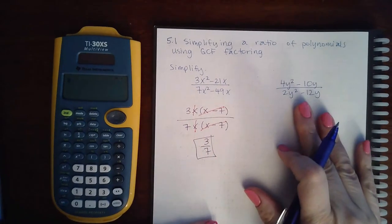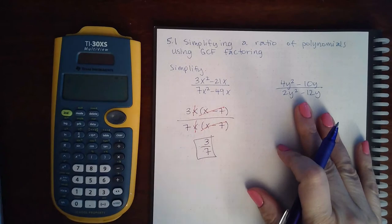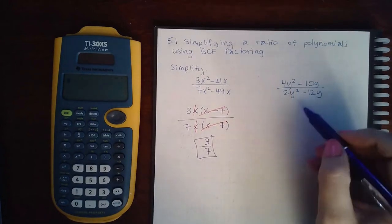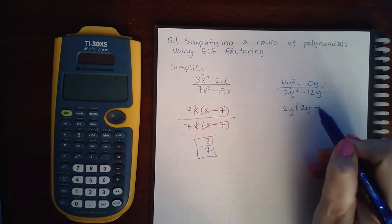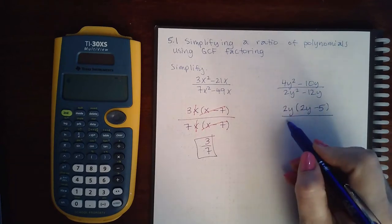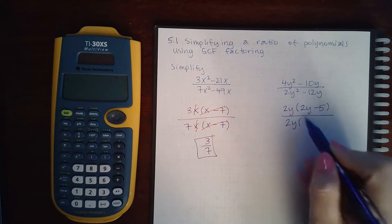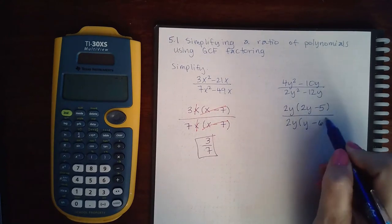For this fraction, I can cancel out a GCF of 2y, leaving me with 2y minus 5. In the denominator, I can cancel out a factor of 2y, leaving me with y minus 6.